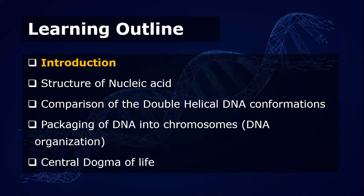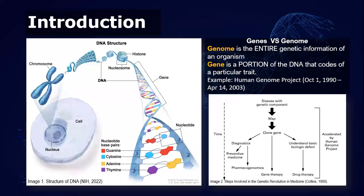Let's start with the introduction. Most DNA is actually found inside the nucleus of the cell where it forms the chromosome. The chromosomes have proteins we call the histone, which binds to DNA. DNA has two strands that twist in the shape of a spiral ladder — we call it the helix. It is made up of four building blocks, which are the nucleotide base pairs: guanine, cytosine, adenine, and thymine.